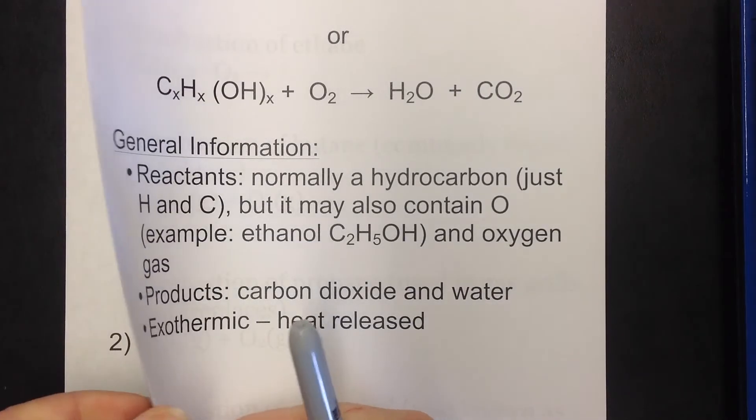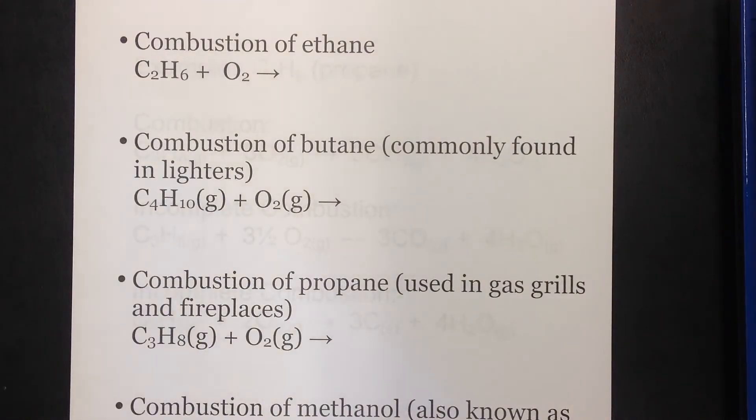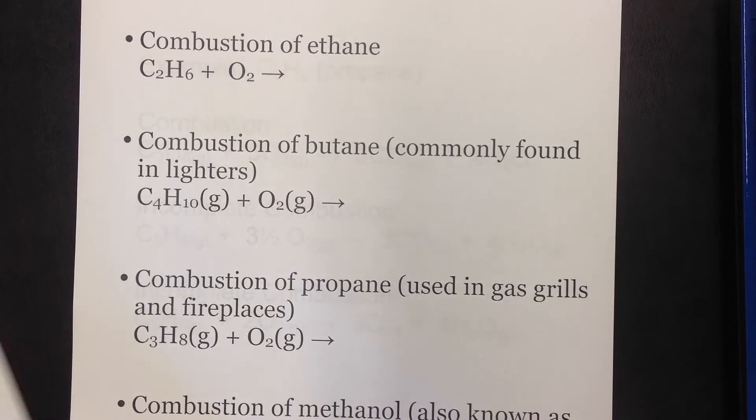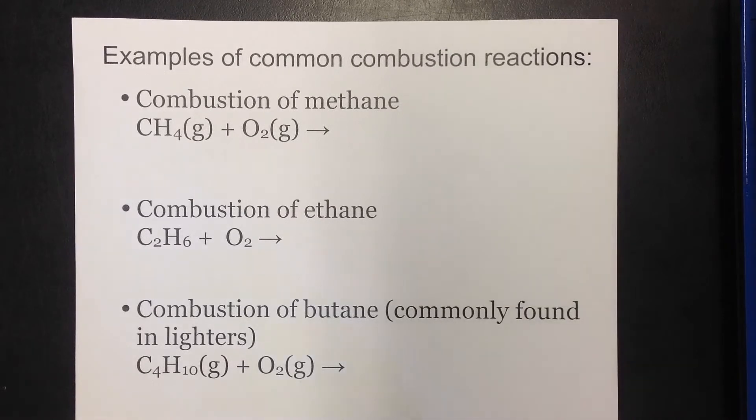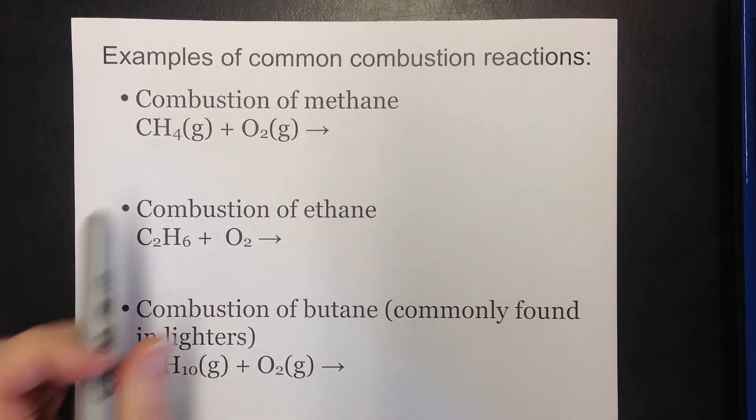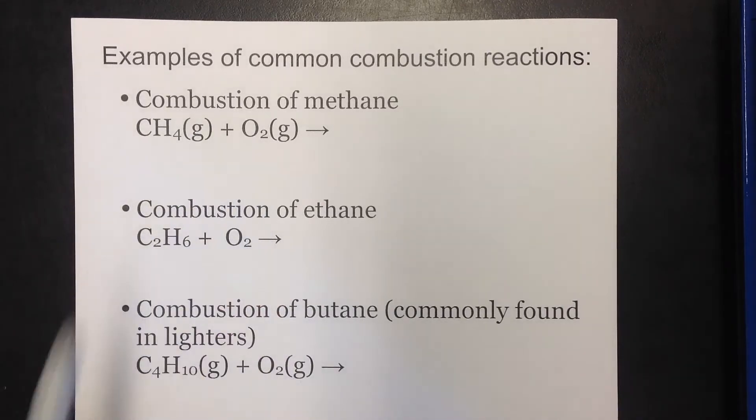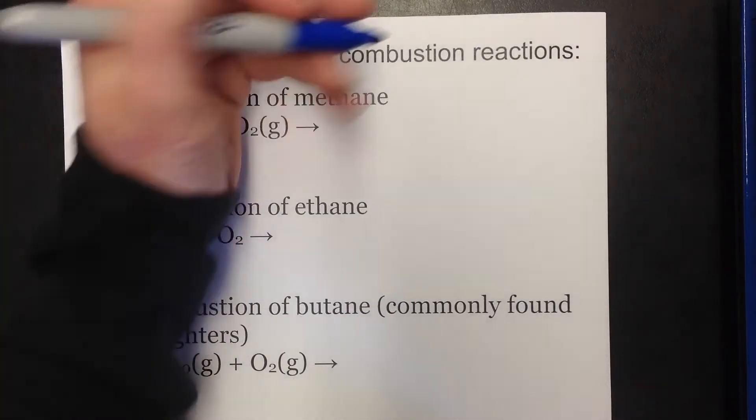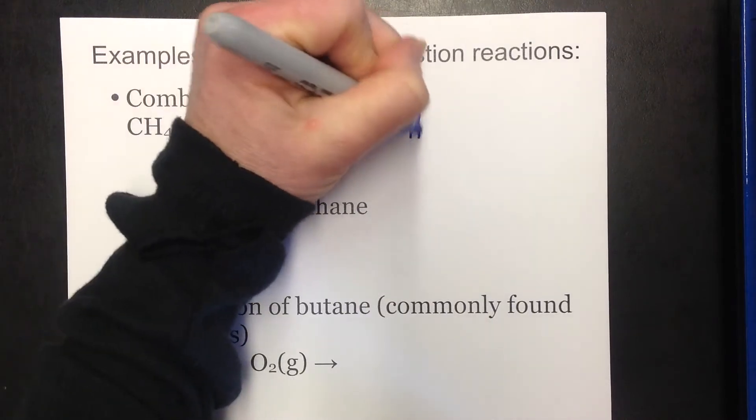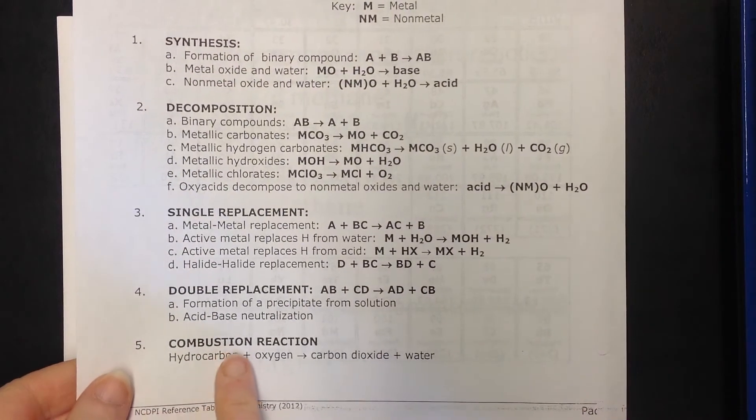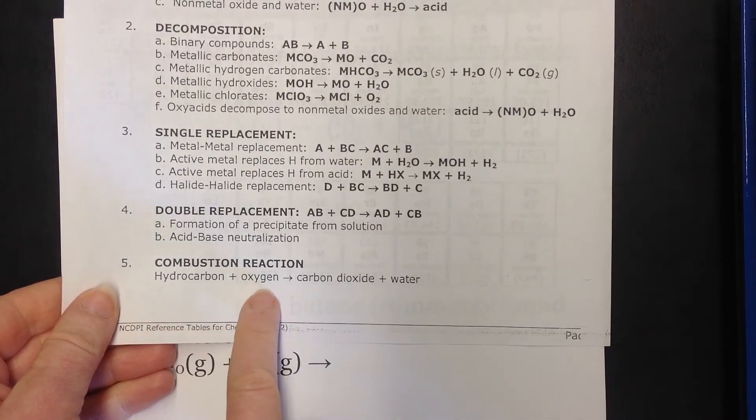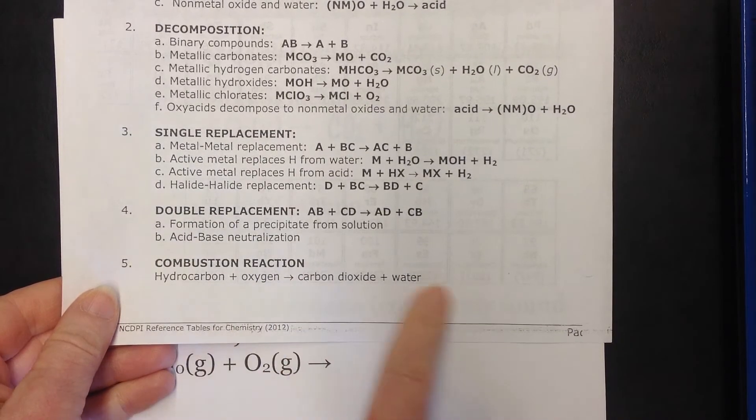So let's take a look at a few common combustion reactions. And as we go through these combustion reactions, we're going to predict the products because they're actually all the same. The first one is the combustion of methane. Methane is a gas, and when we expose methane gas to oxygen gas, that is going to be a combustion reaction. And your products will be carbon dioxide and water because those are always the two products of a combustion reaction.